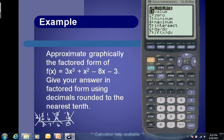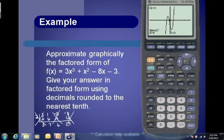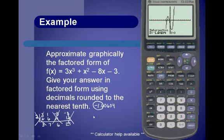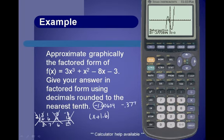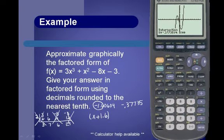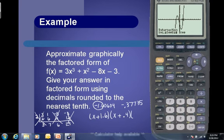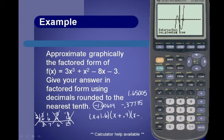We do second trace, which is calculate, number 5, enter, enter. Moving the cursor to the first intersection, it shows the x-intercept is approximately negative 1.6. If the zero is negative 1.6, the factor would be x plus 1.6. The second value is approximately negative 0.4, so the factor would be x plus 0.4. The third gives an x-intercept of 1.7, so the factor is x minus 1.7. This is our factored form with zeros rounded to the nearest tenth.